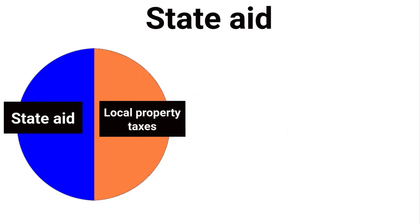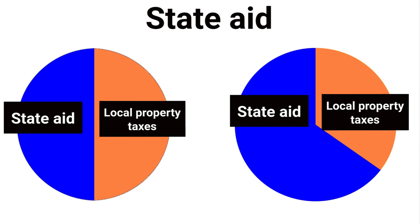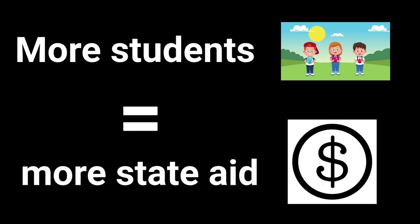When a greater portion of revenue comes from state aid, local property taxpayers have a smaller share of the tax burden. Distribution of state aid is a complex formula with student enrollment being one aspect of it.